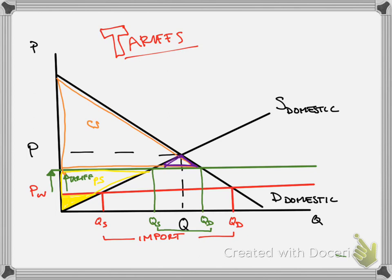We also then get this area here. So if you look at this area, the height of that is the size of the tariff. The length of that is the import. This is what we call tariff revenue. This is revenue generated for the government coming from the tariffs.